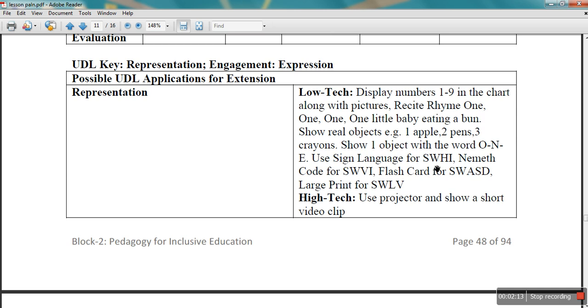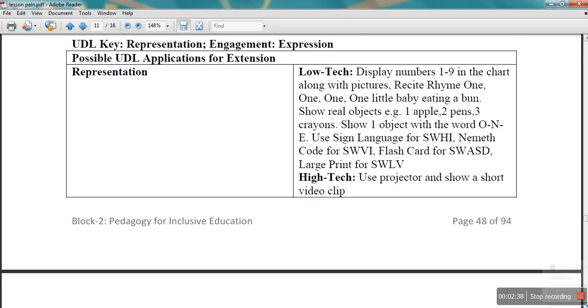Then sign language for students with hearing impairment will be used. O-N-E, flashcards will be used, and large print will be used for specific learners with visual impairment. And high technology, she will use a projector and a short video clip in the classroom. So you can see the kind of variation she has planned and the different ways the topic will be represented to the class.